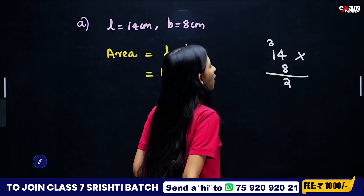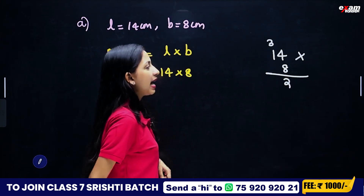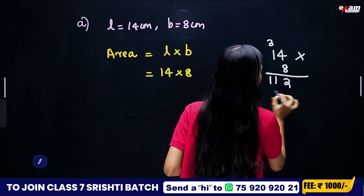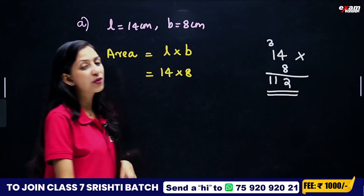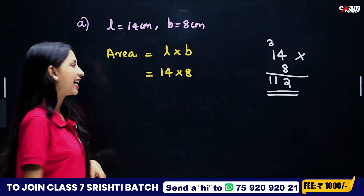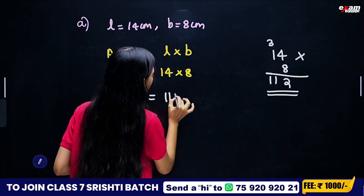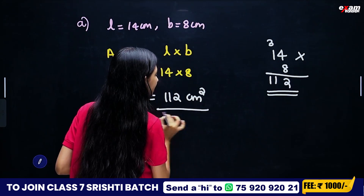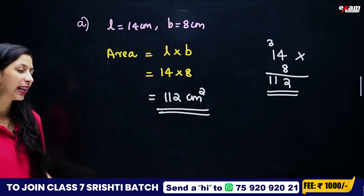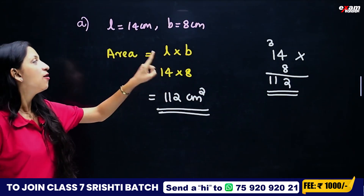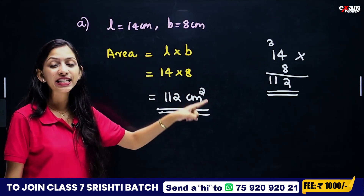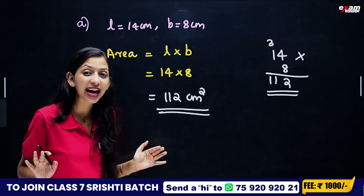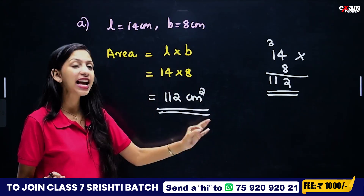The length is equal to 8 plus 3, which equals 11. So the answer is 112 cm². The area of rectangle ABCD is 112 cm².